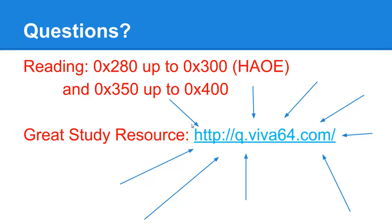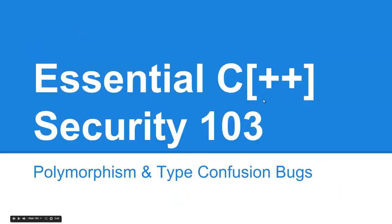That concludes this lecture on heap, format string, and race condition vulnerabilities. The following sections of the Hacking Art of Exploitation book are relevant. And at this point, you should play around with the quiz on C++ vulnerabilities and bug hunting at q.viva64.com. This is hosted by PVS Studio, the team that puts that together. You should start homework 2, the homework that corresponds to these lectures. That wraps it up. Till next time.